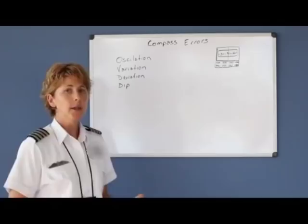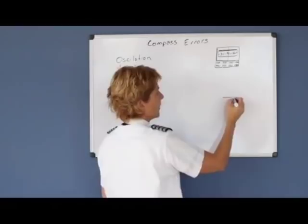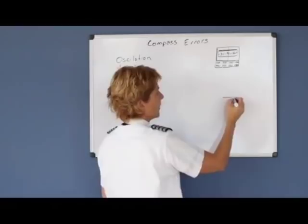Oscillation comes from turbulence where the compass is actually mounted on a pivot. It's basically a magnet, there's actually two magnets, but for simplicity, I'll just draw it like this.